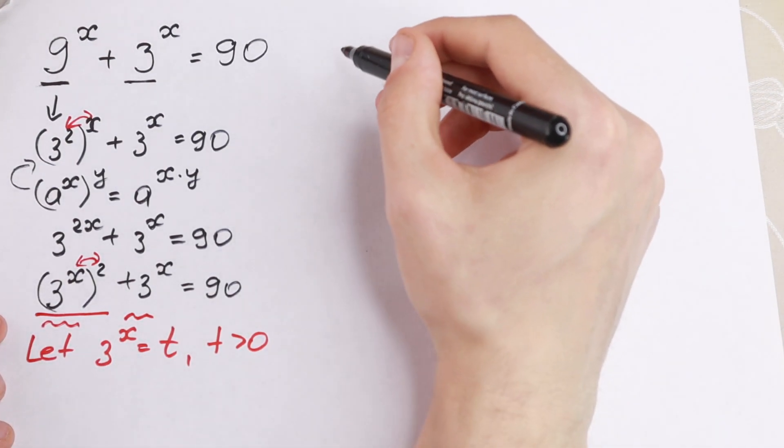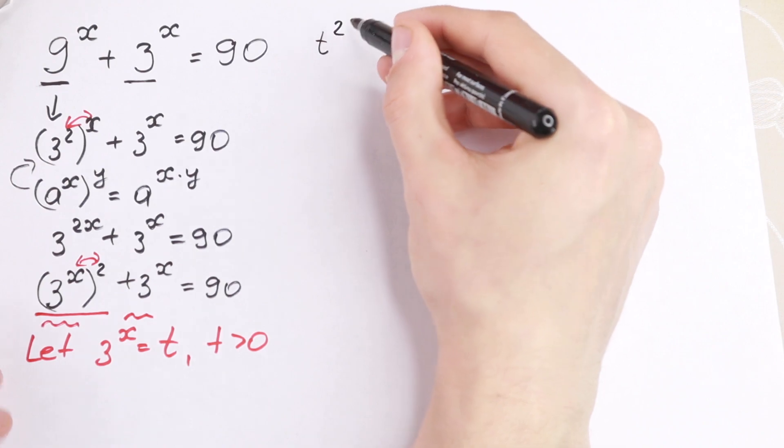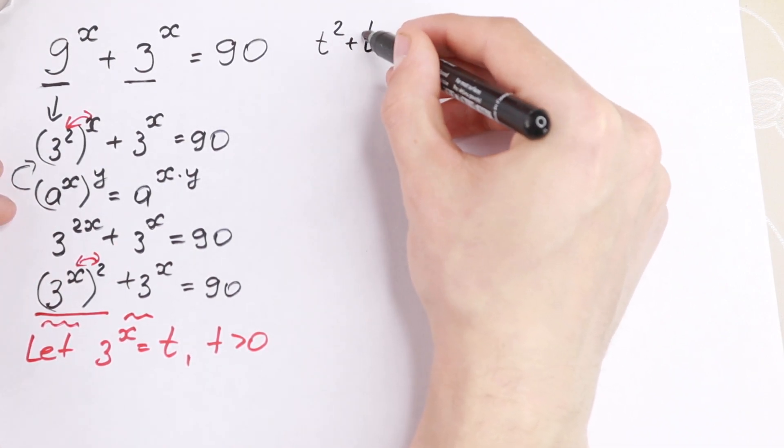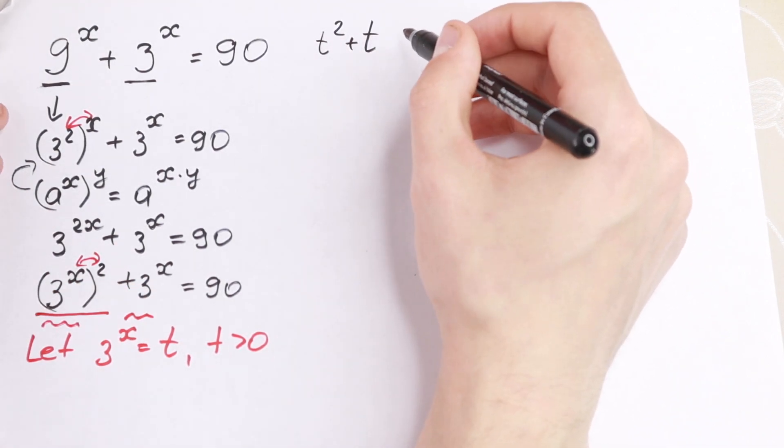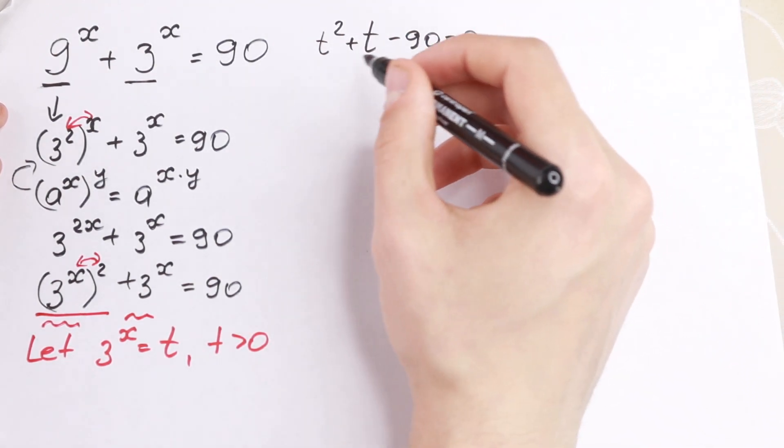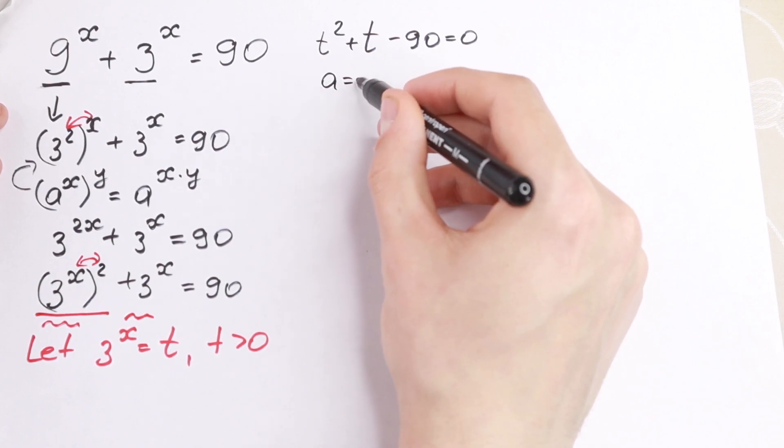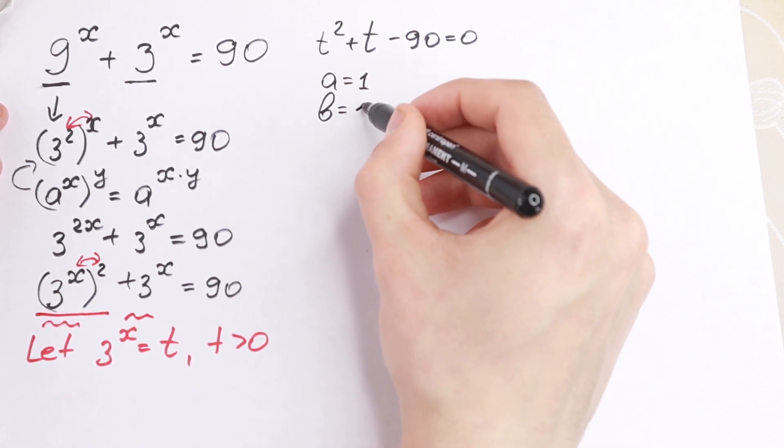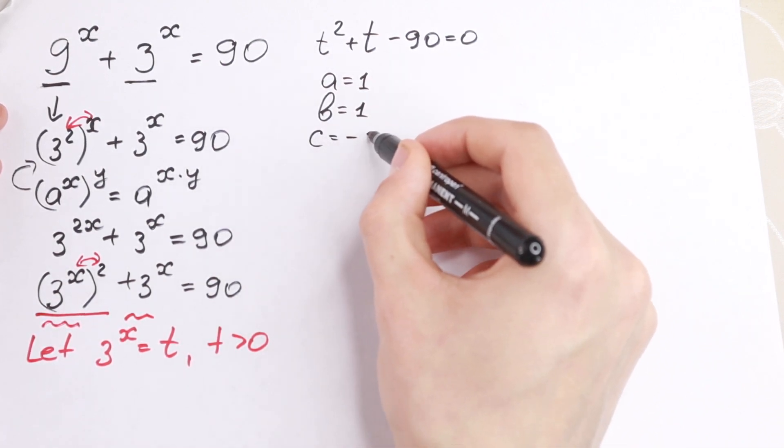So which equation we will have? We will have t square plus t and I bring this 90 on the left. And now we will have quadratic equation because we will have classic quadratic equation. From here a equal to 1, b equal to 1 and c equal to minus 90.